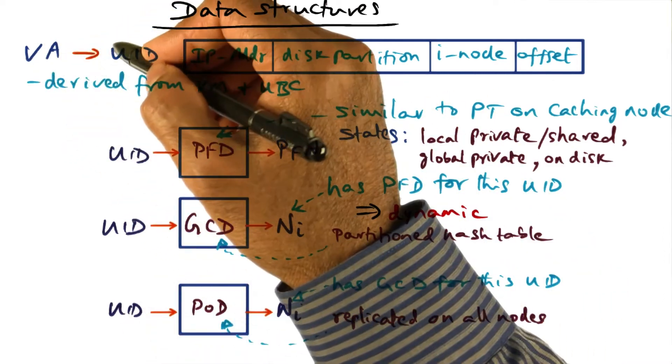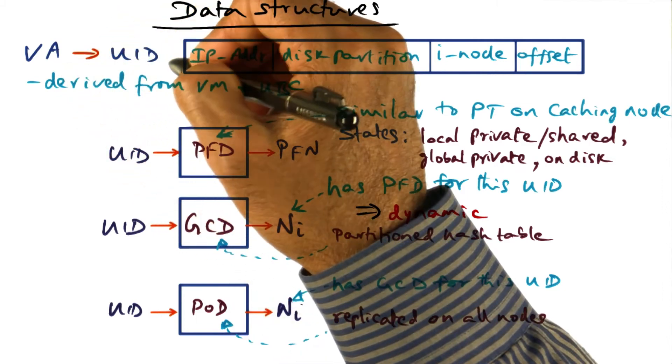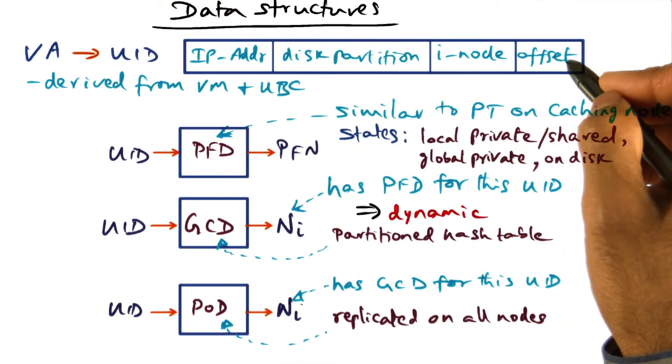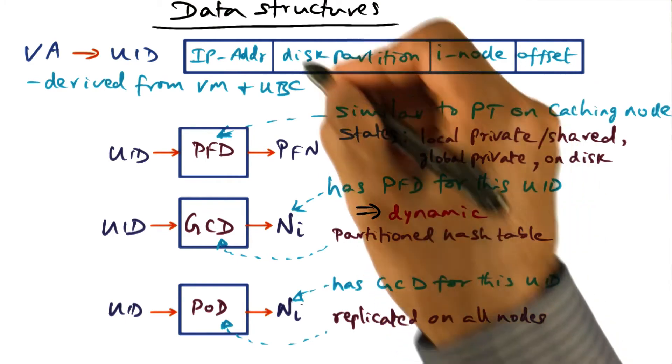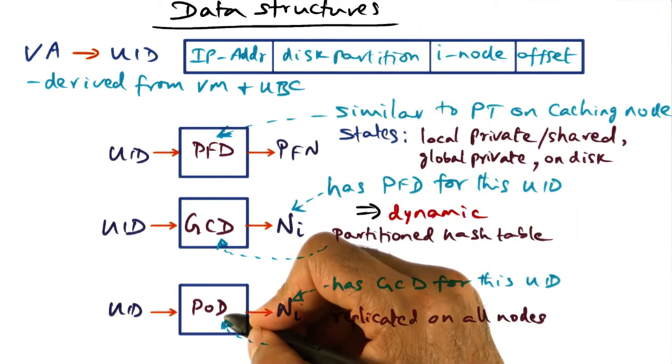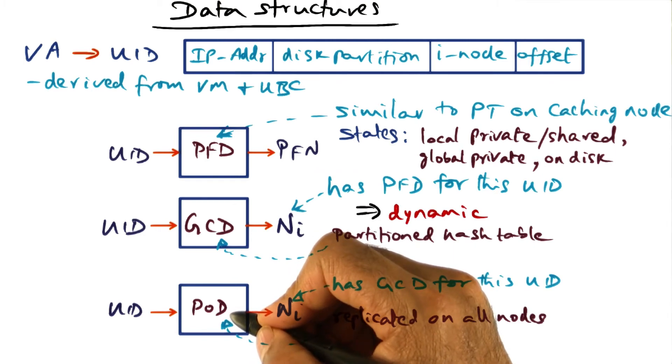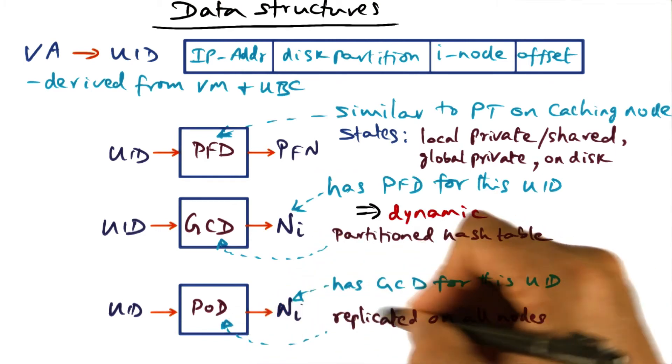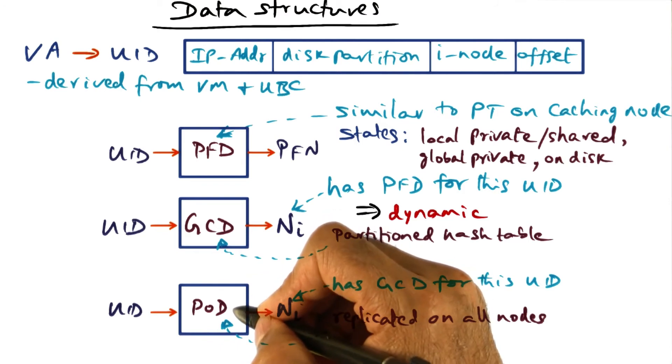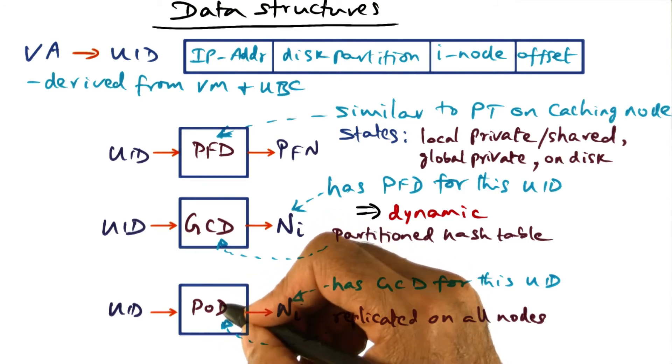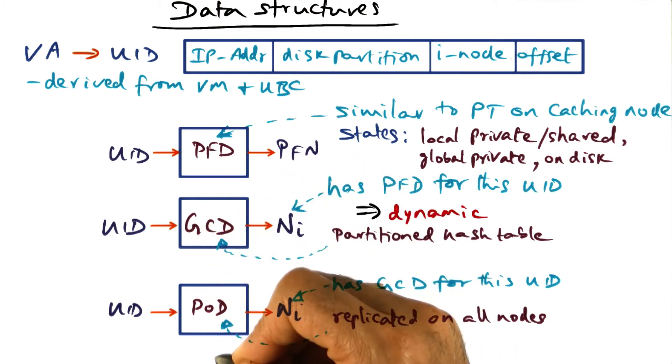Because it has been mapped from a virtual address of a single process to this UID space, and this spans the whole cluster. And what we have done is we have partitioned that UID space into a set of regions of ownership. And that's what is called the page ownership. So every node is responsible for a portion of the UID space, and that is this global cache directory.